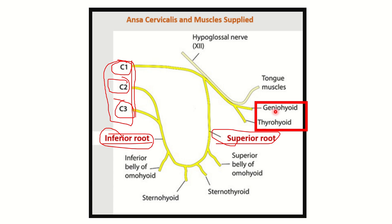The superior root supplies the geniohyoid muscle and the thyrohyoid muscle. On the other hand, the inferior root supplies the sternothyroid, omohyoid, and sternohyoid muscles. A mnemonic to remember these muscles is helpful.